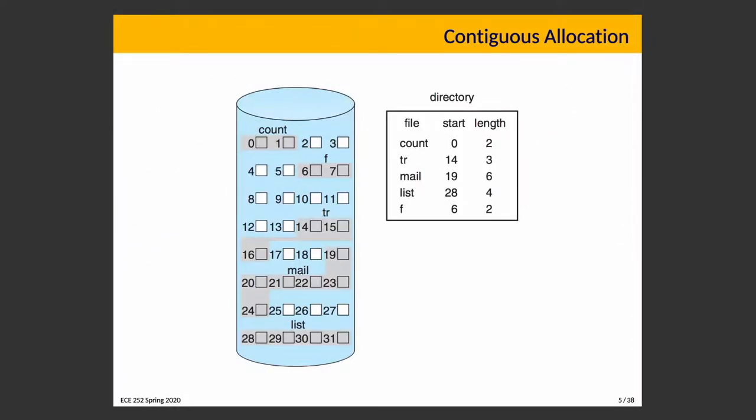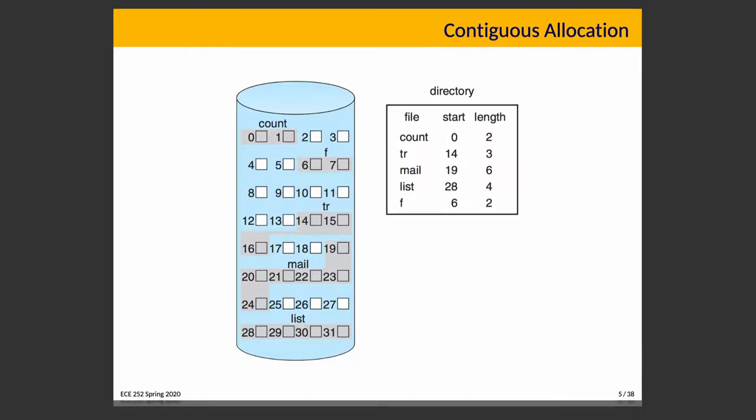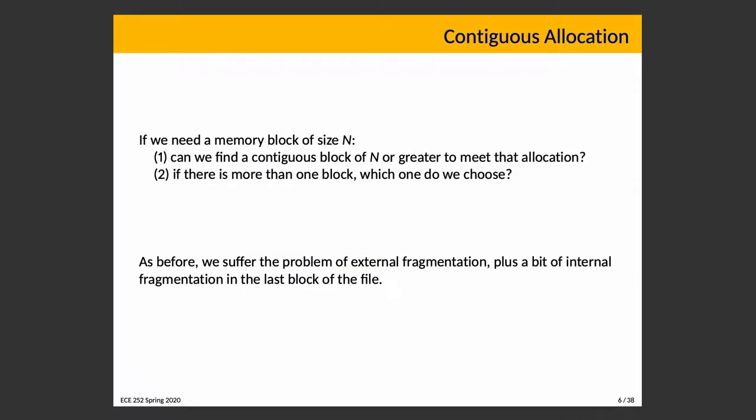In a simple example with 32 blocks, various files each have a start and a length laid out in the diagram. There are, of course, difficulties with contiguous allocation. Finding a contiguous block of size N might not always be possible. What if we can't find one uninterrupted chunk big enough to contain the entire file? And if there is more than one available block, which do we choose? It's not necessarily obvious how to most efficiently place files on disk.